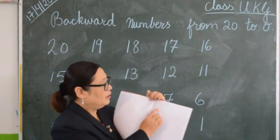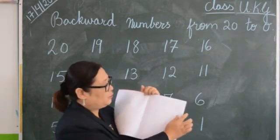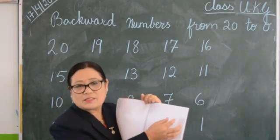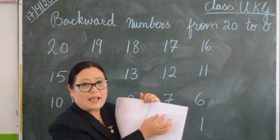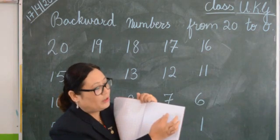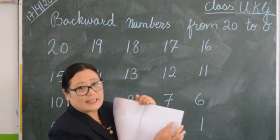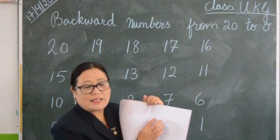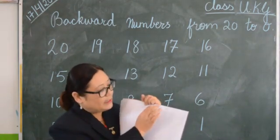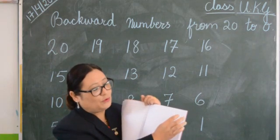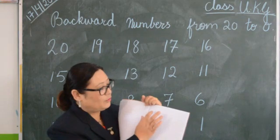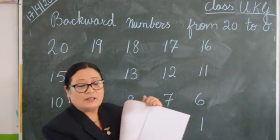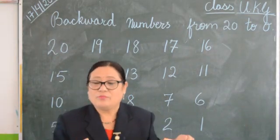Start from here and write this way: 20, 19, 18. Leave one box. And when you are coming to the next line, leave this second line — this line you have to leave — and then on the next line you have to write. As you have done earlier with counting numbers, nicely written from here: 0, 1, 2, 3, 4, 5, 6, 7, 8, 9, 10 up to 50. Like that. From here start: 20, 19, 18. Like this. Write and you have to learn also.